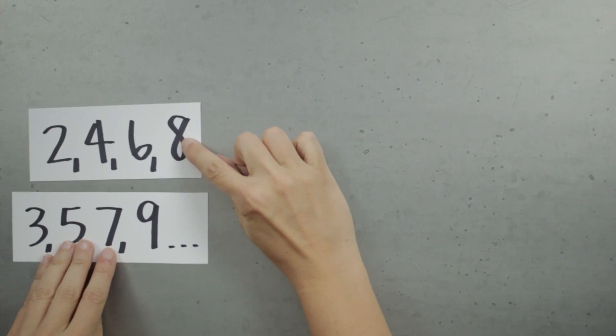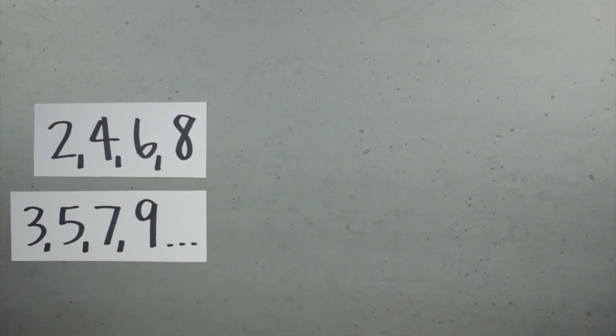So what's a sequence? Well, a sequence is just a set of terms that are put in order. Both of these are sequences because they're a set of values separated by commas written out in a specific order.